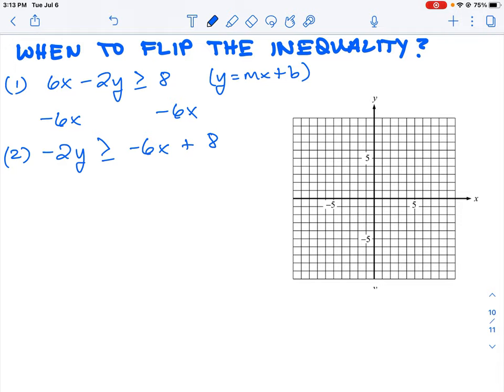Once we have this equation in this form, we need to isolate the variable y by itself. So what we do is we divide by the number in front of y, which in this case is negative 2.